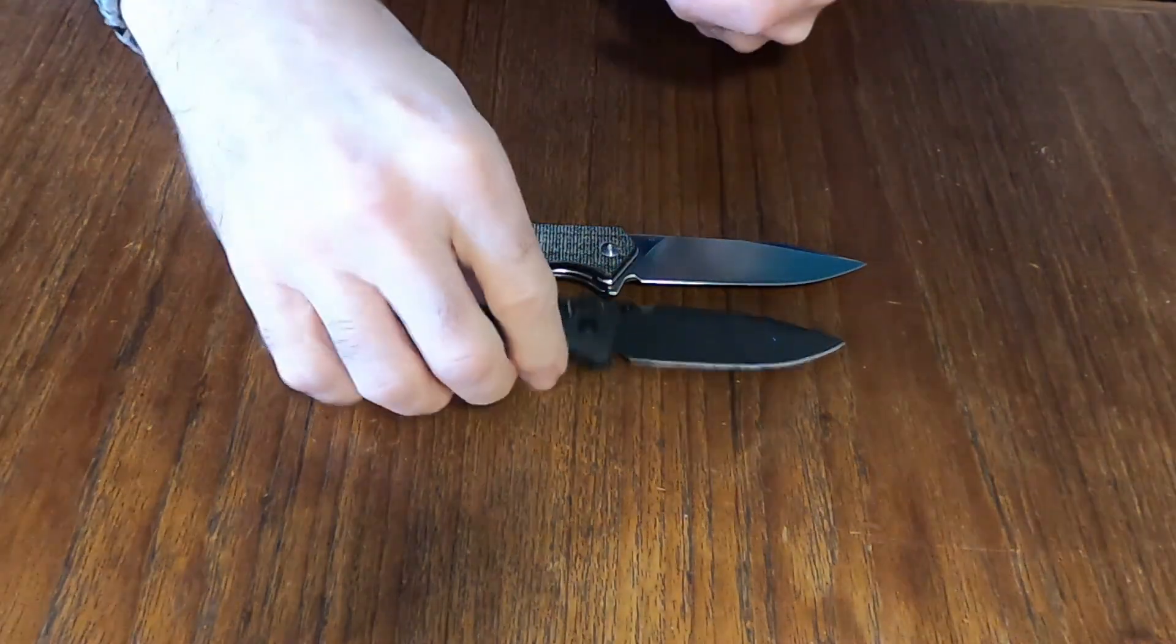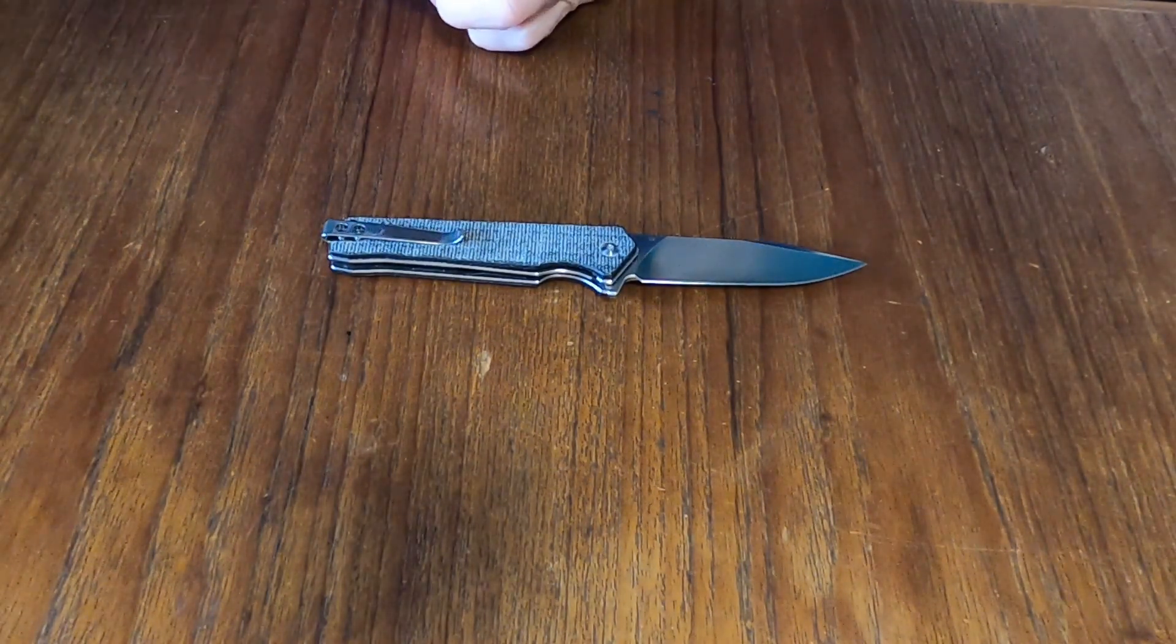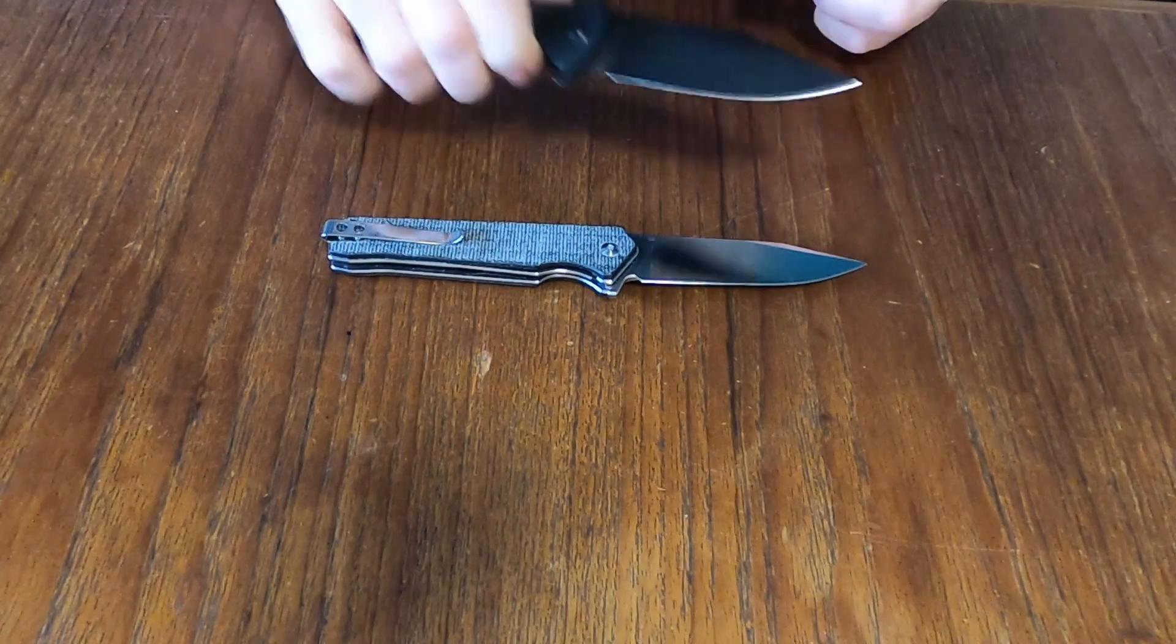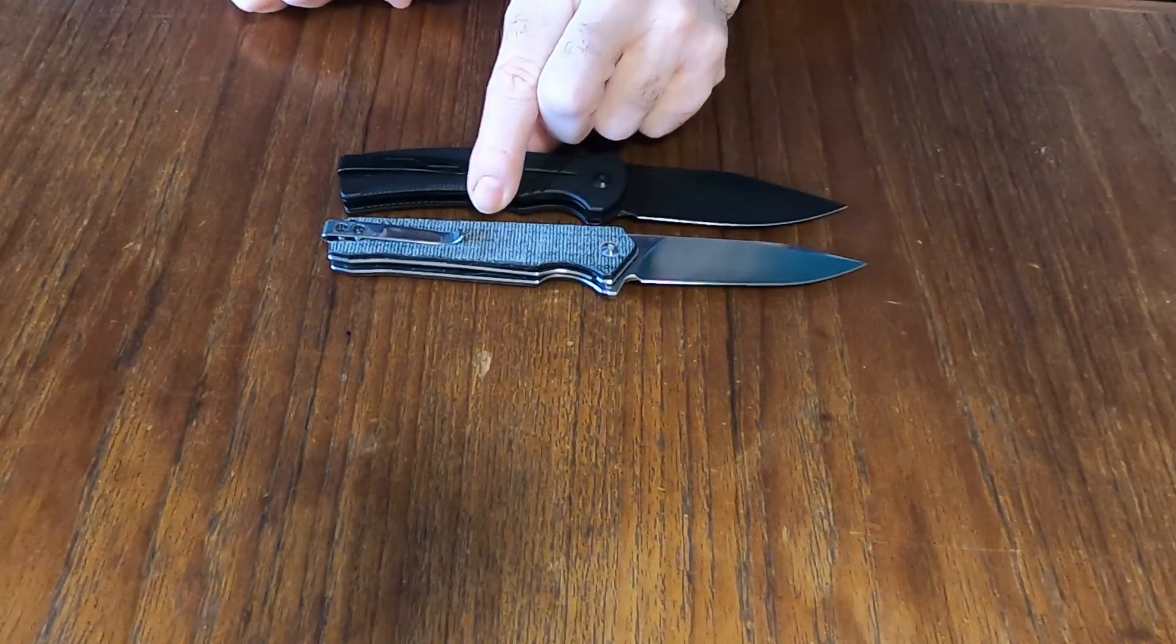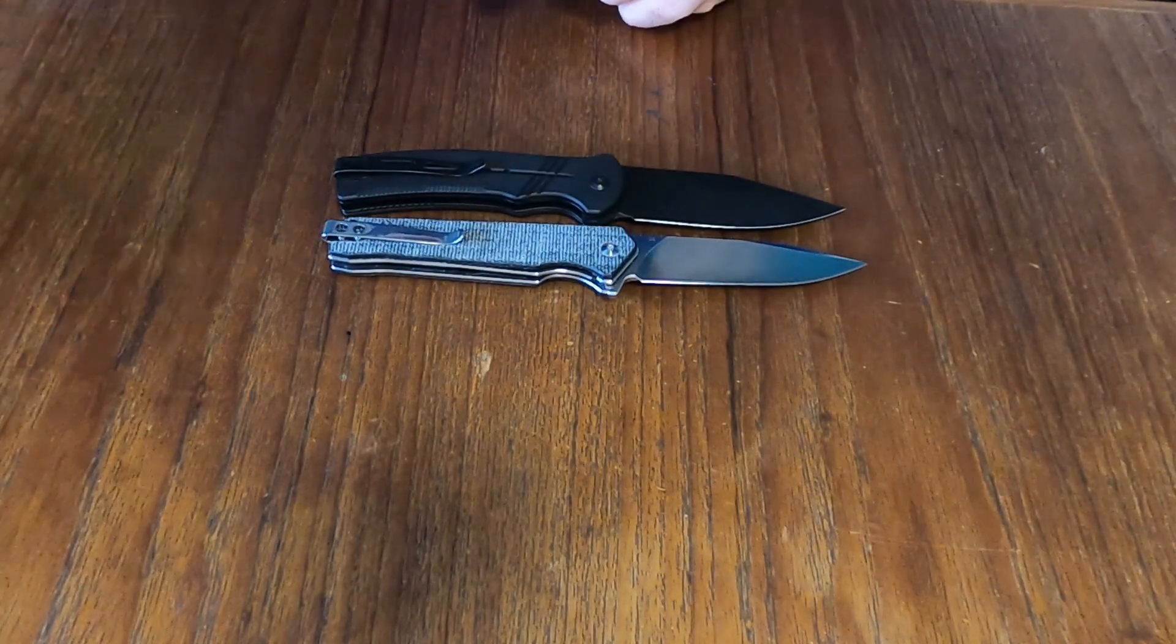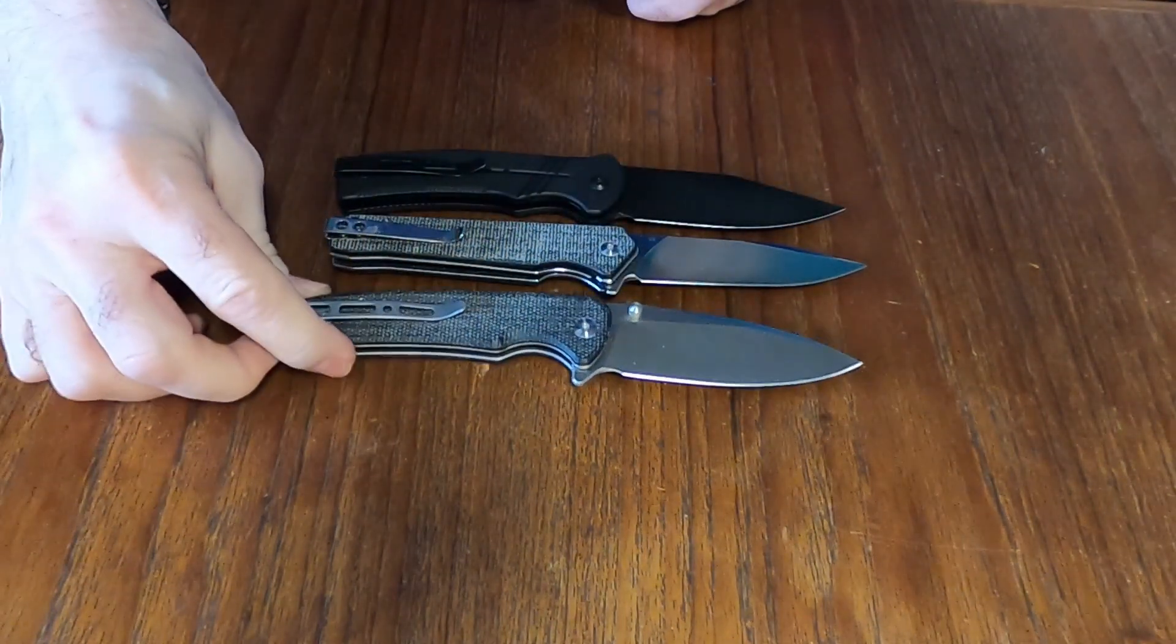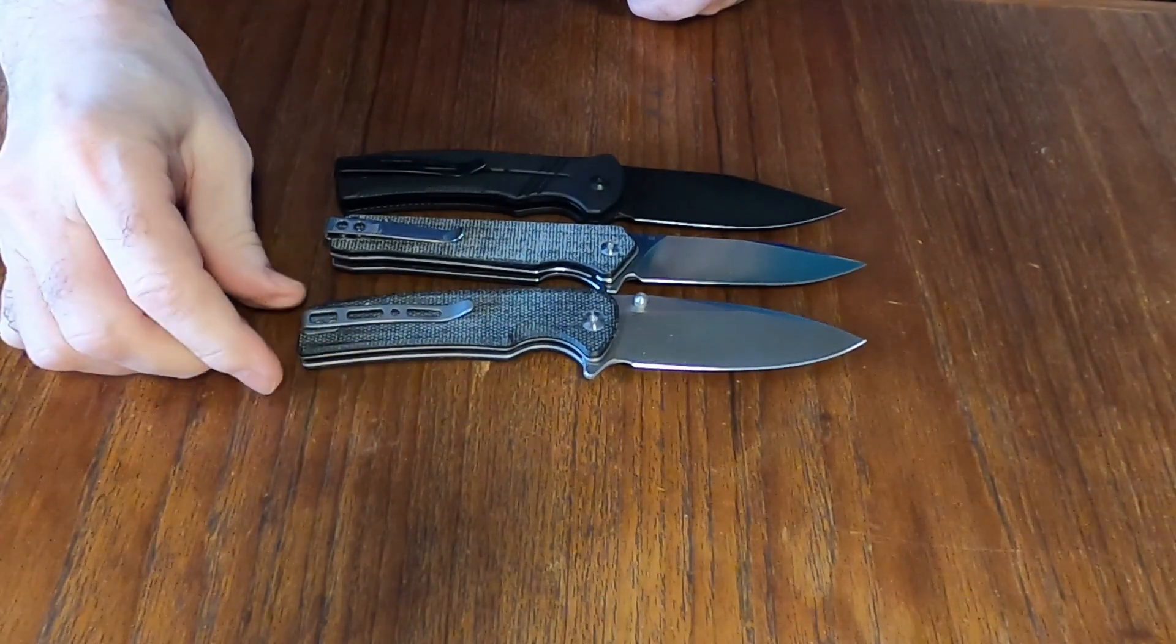And grab a couple of the bigger knives. We've got the Civivi Cogent which is slightly shorter and also the SunCut Saxy which again is slightly shorter.